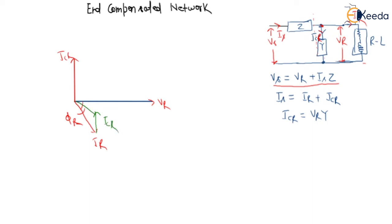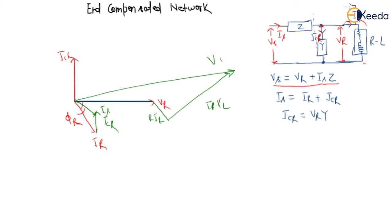Adding IR and ICR gives us IS. Now with IS, we can calculate VS: VS equals VR plus IS times R plus IS times XL. Adding these components gives us VS on the phasor diagram. The angle between IS and VS is the sending end power factor angle. The power loss is P_loss = 3 × IS² × R.